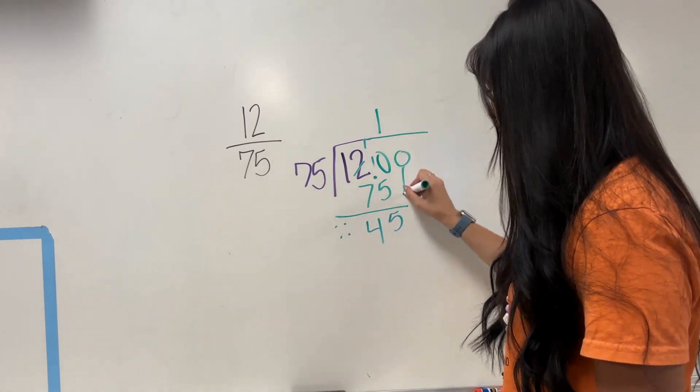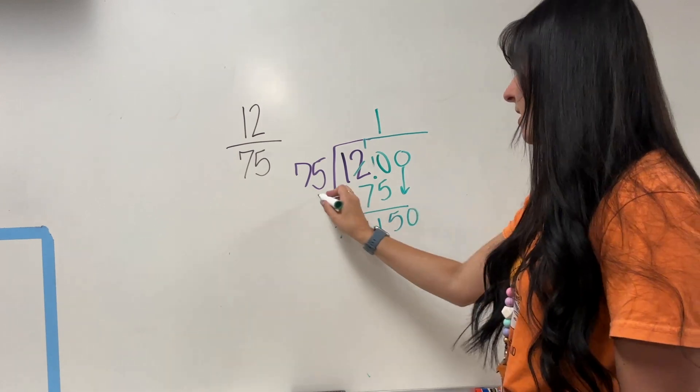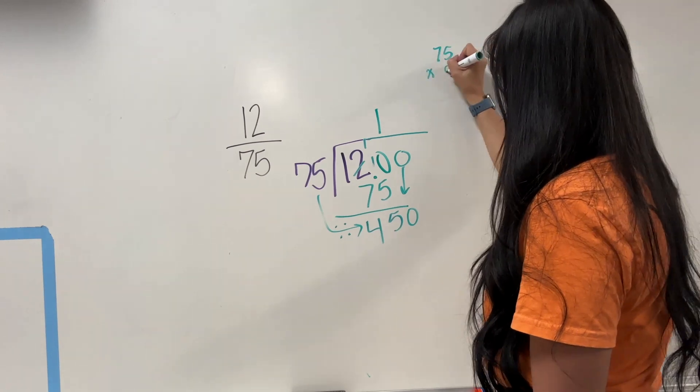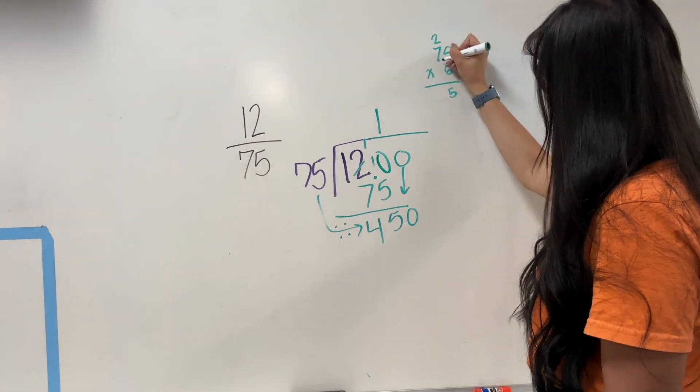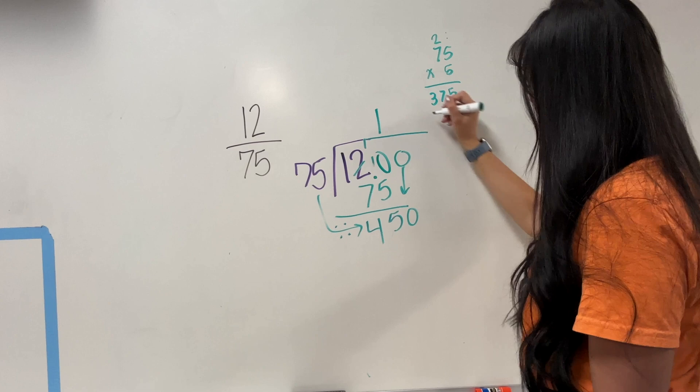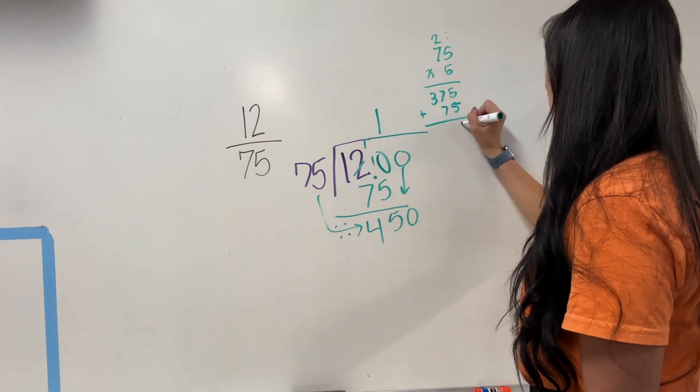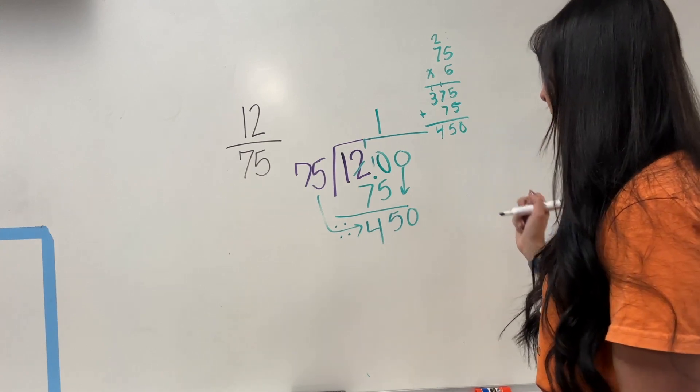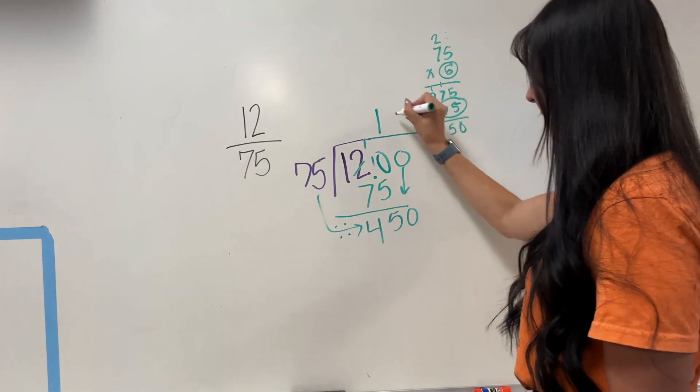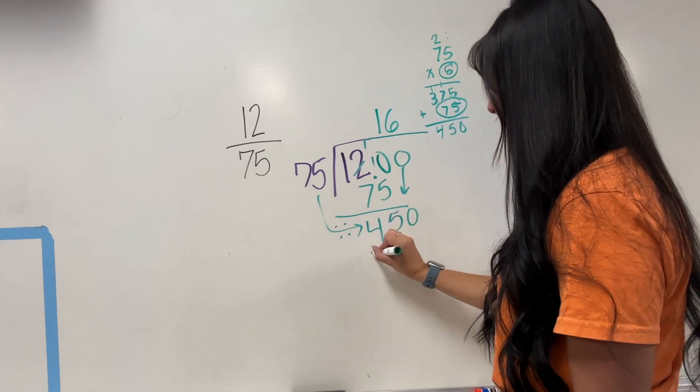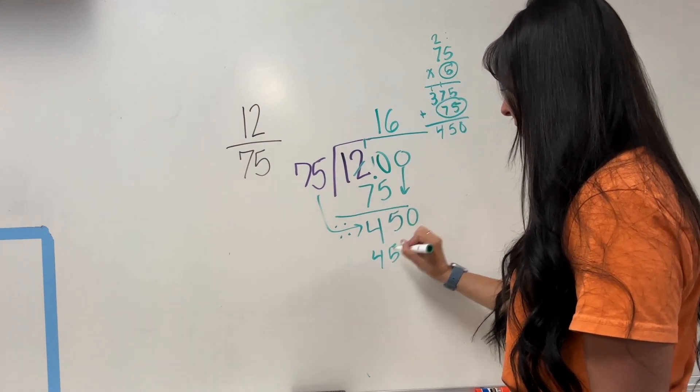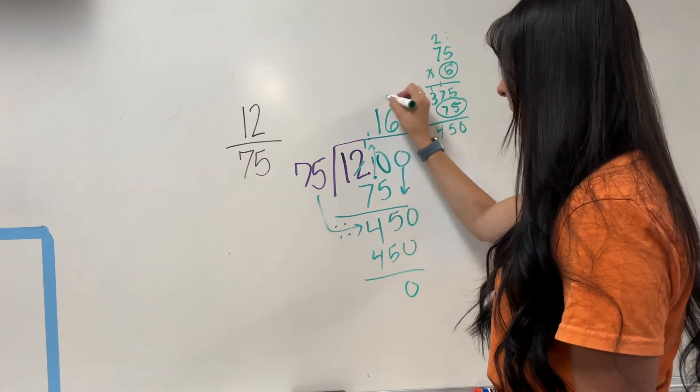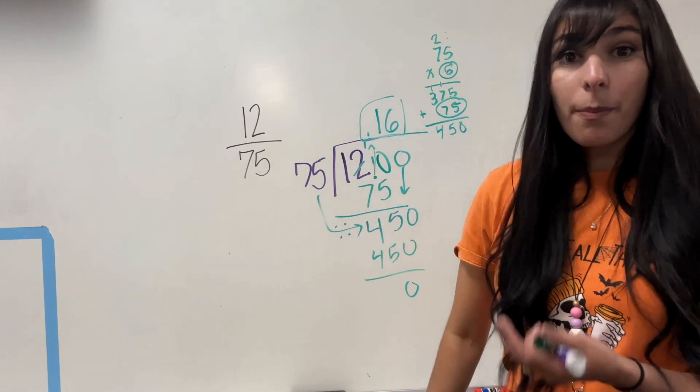So I'm going to have 45. Can't do that. So 450. 75 goes into 450. Let's see. Exactly 450. So I take this 5 plus the one more I added, giving me 6. And that's going to give me exactly 450 and a 0. Move that decimal up. So the answer is 0.16.